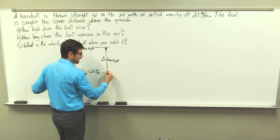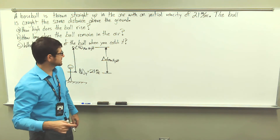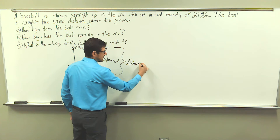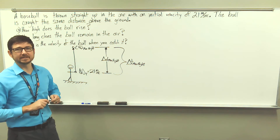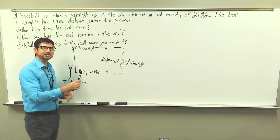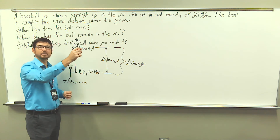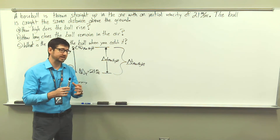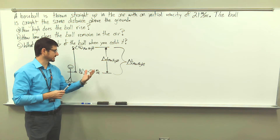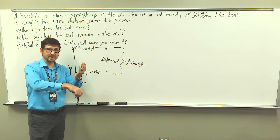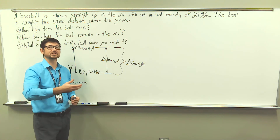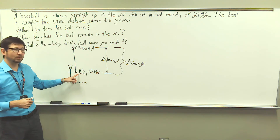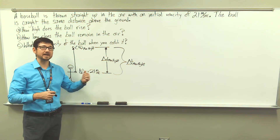We don't know the displacement yet, but we know the units will be in meters. We also have the time interval delta T to maximum height. One important thing to note: even though our initial velocity vector is pointed in the positive y direction, the acceleration vector is pointed in the negative y direction. So as soon as the ball is released, the acceleration causes it to slow down, come to a stop, and then accelerate back down to the ground, where you catch it at the same height you released it.